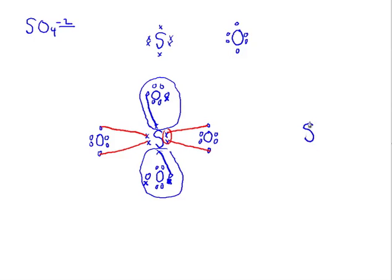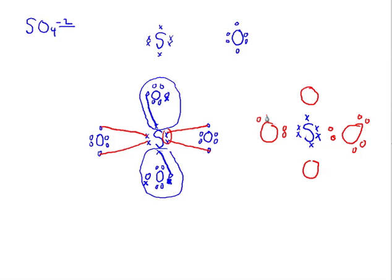Redrawing the structure: sulfur has six electrons marked as X, and each of the four oxygens has six electrons marked in red so we can clearly see where each electron comes from. The additional electrons from the negative two charge are added to two of the oxygens. We can see the double bonds on the left and right sides, and single bonds on the top and bottom.